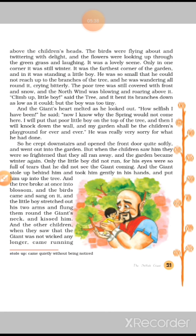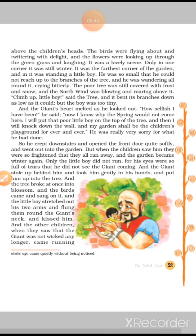Only the little boy did not run, for his eyes were so full of tears that he did not see the giant coming. Lekin jo chhota bachcha tha woh vaha se nahi bhaaga, kyunki uske aankhen itni bhari hoi thin — aansuon se bhari hoi thin — ki usse saamne kuch bhi dikhai nahi de raha tha. And the giant stole up behind him and took him gently in his hands and put him up into the tree. Aur giant ne usse peeche se uthaya aur usse aram se tree ke oopar bitha diya. And the tree broke at once into blossom and the birds came and sang on it, and the little boy stretched out his two arms and flung them round the giant's neck and kissed him.